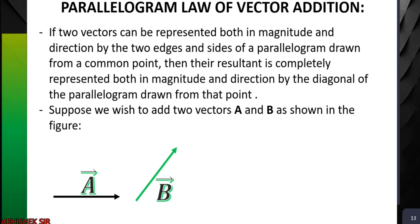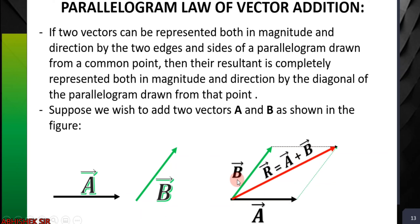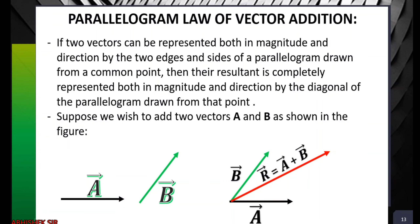We draw vector A and vector B from the same point. From that common point, we draw the diagonal — that diagonal represents the resultant of A and B. We then complete the parallelogram by drawing the other two sides in dotted lines. The diagonal is the main element showing the addition of vector A and vector B — that is the resultant.